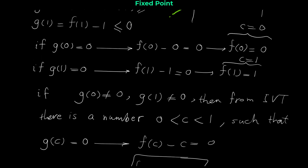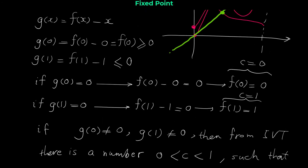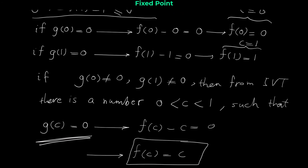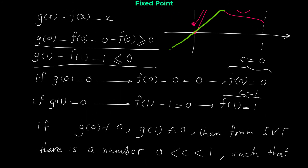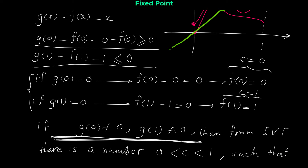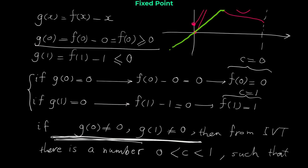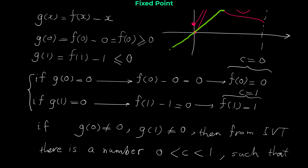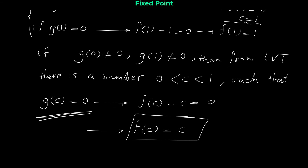Let me explain again how we got this result. g(0) is positive, g(1) is negative, so somewhere between 0 and 1, g(c) = 0. I considered g(0) = 0 and g(1) = 0 separately first, so that in Case 3 I know g(0) > 0 and g(1) < 0 strictly. Based on all three cases, the proof of this theorem is complete.